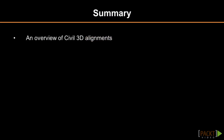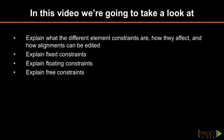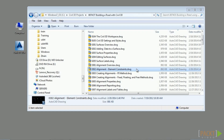In summary, we discussed an overview of Civil 3D alignments. In the next section, we'll discuss alignment element constraints. Welcome to the second video of Section 3 discussing alignment element constraints. Upon completion of this video, you will have an understanding of what Civil 3D alignment constraints are — fixed, floating, and free — and how they affect how alignments can be edited.